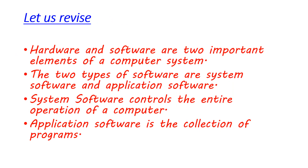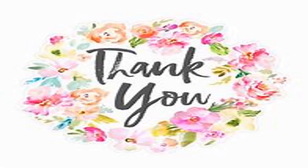Now let us revise today's concept. Hardware and software are two important elements of a computer system. The two types of software are system software and application software. System software controls the entire operation of a computer. Application software is a collection of programs. Dear children, hope you have understood today's concept. Thank you.